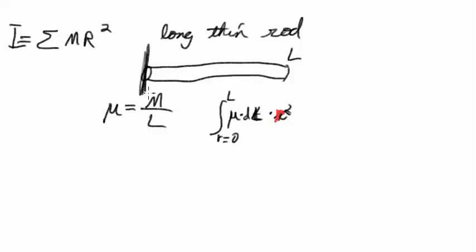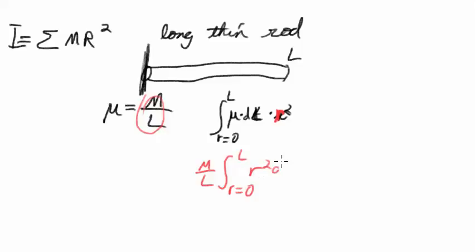The mu is M over L, so it comes out of the integral as a constant — everything there is constant. Integral from R equals zero to L of R squared dR. I'm changing this so it's not a differential L, it's a differential R.